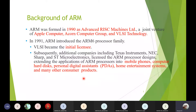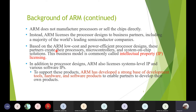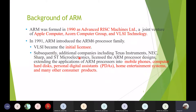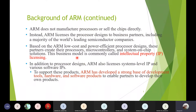With less cost, you can design any embedded system using 8-bit or 16-bit processors. If you want to overcome other parameters — that is, time and processing speed — then you can use ARM processors. ARM does not manufacture processors or sell chips directly; instead it licenses processor designs to business partners.